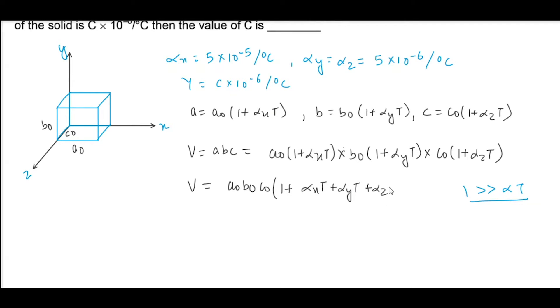We can write 1 plus alpha x into T plus alpha y into T plus alpha z into T. The original volume V0 is equal to a0 times b0 times c0. So V is equal to V0 times 1 plus alpha x plus alpha y plus alpha z into T.